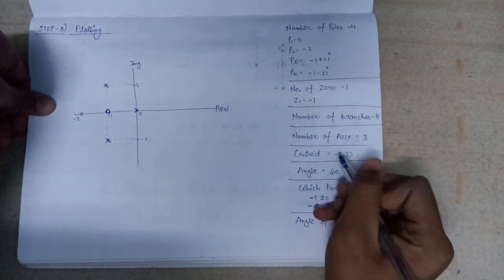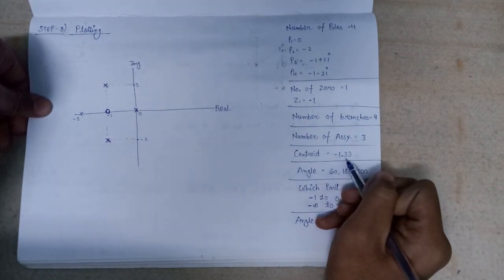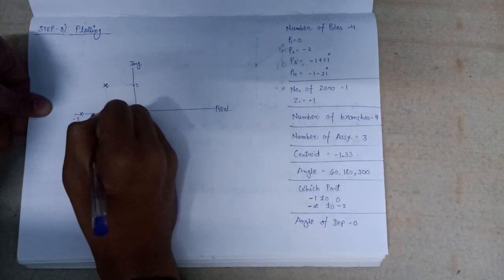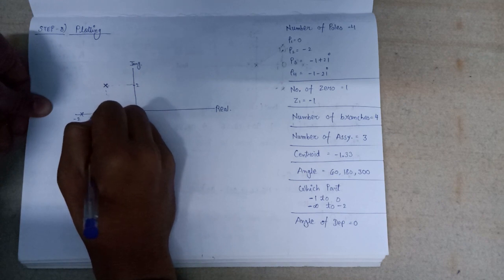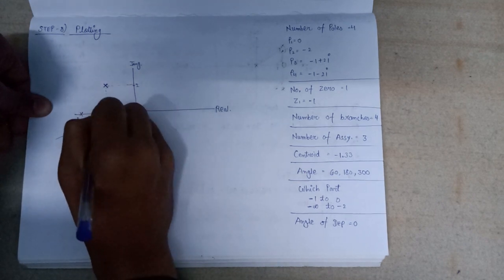Since the centroid of asymptote is equal to minus 1.33, so it will be just like here. So it will serve as a centroid minus 1.33.